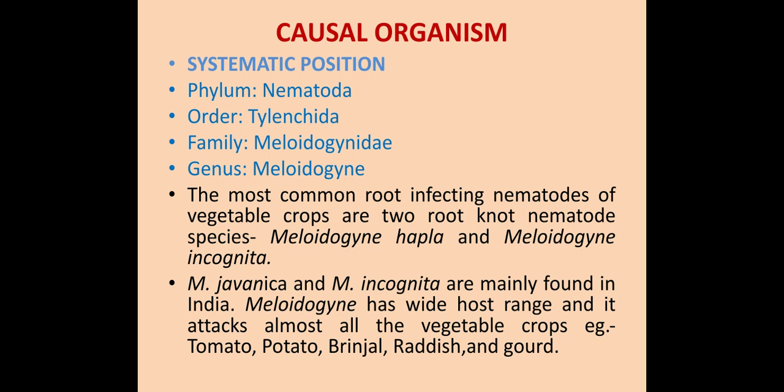Causal organism: The causal organism of root knot nematode is Melidogyn. The systematic position of Melidogyn is Phylum Nematoda, Order Thylankida, Family Melidogynidae, Genus Melidogyn. The two common species are Melidogyn hapla and Melidogyn incognita, the most common root-infecting nematodes of vegetable crops throughout the world. In India, Melidogyn javanica and Melidogyn incognita are mainly found.